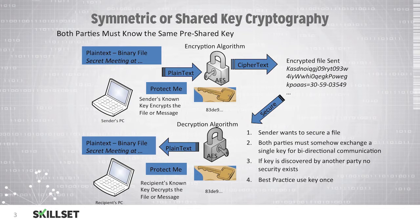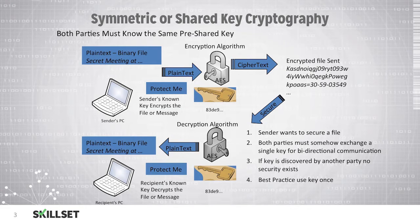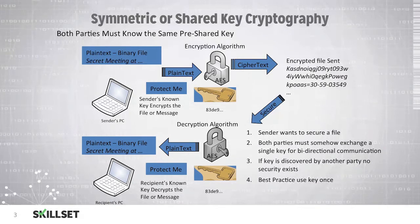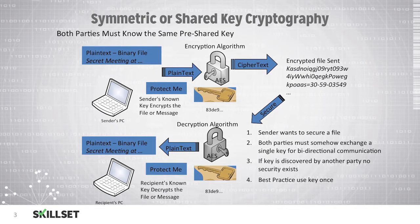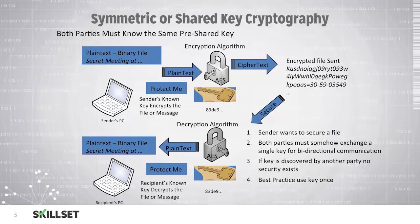This plain text is put through the encryption algorithm AES using the secret key. The plain text data then becomes ciphertext, which can be sent through any communication method because anyone who intercepts this message will not be able to understand the content since they do not have the secret key. This data is then transmitted to the recipient, who uses the same algorithm AES and the same key to decrypt the message and now knows about the secret meeting.